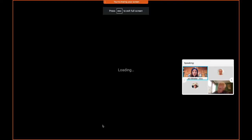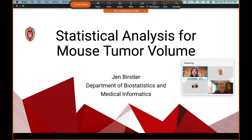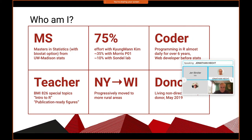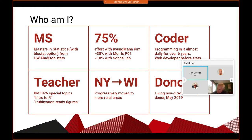I am Sanya Koller and this is biostatistician Jen Bursler. I'm going to be talking about stats analysis for mouse tumor volume experiments. I wasn't familiar with who exactly would be in the audience, so I want to tell you a little bit about myself. I have a master's in statistics from UW. I have 75% of my effort with Kyungman Kim. Not all of that is with this type of cancer research, but a fair chunk of it is.